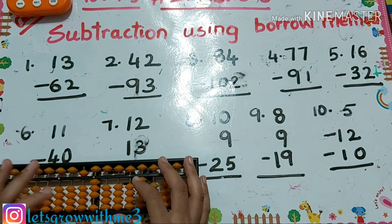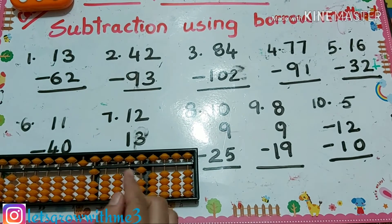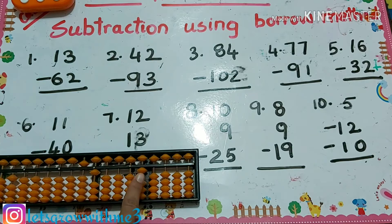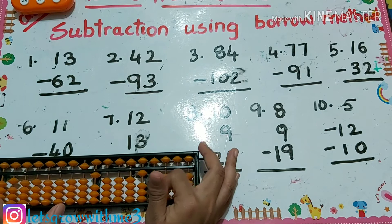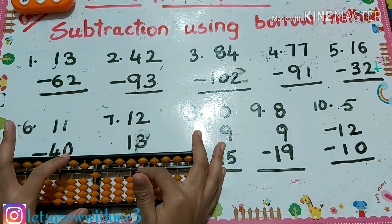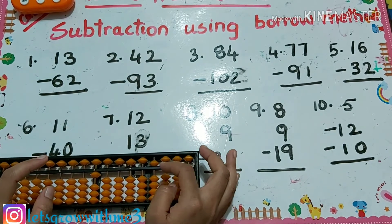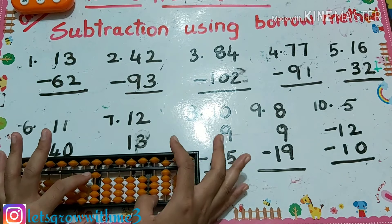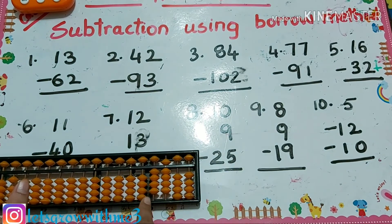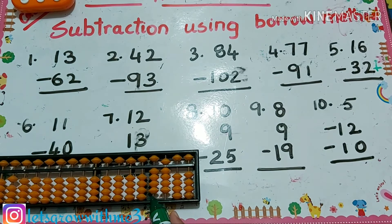Next I have to subtract in the ones column: minus 2. The partial answer is 51, but it is not my actual answer because I'm subtracting from a bigger negative value. So I should get a minus result — we have to do the complement. That means I have to subtract 51 from 100, which is what I borrowed earlier. Then I will get my complement value, which is the actual answer: minus 49.